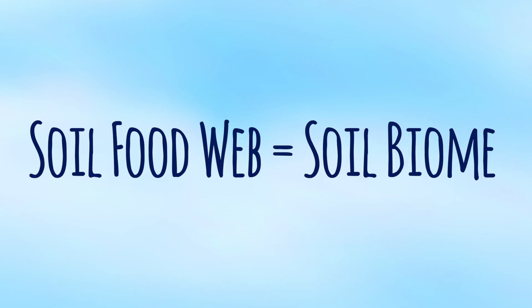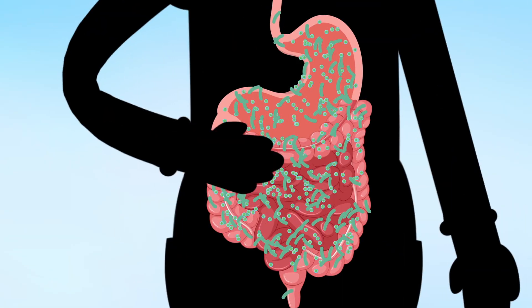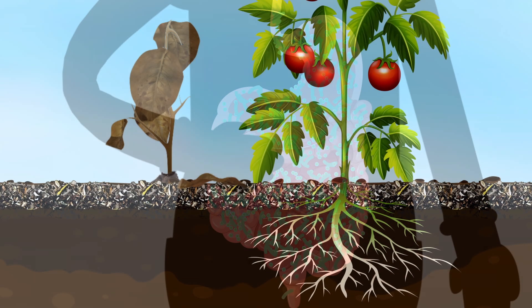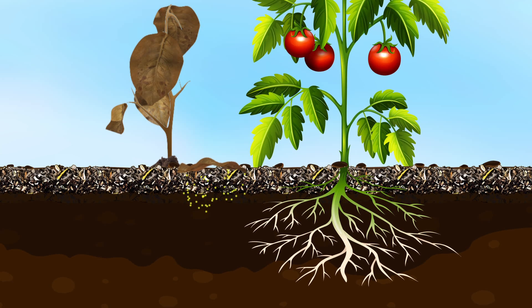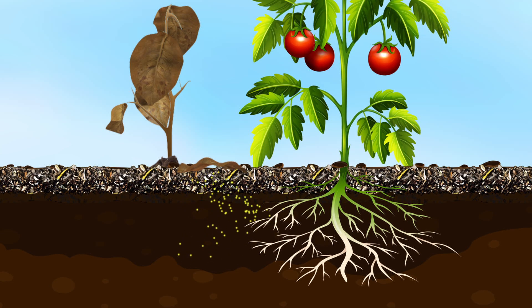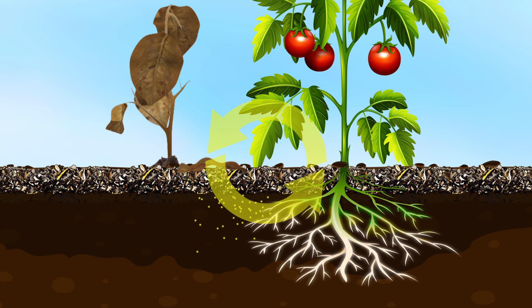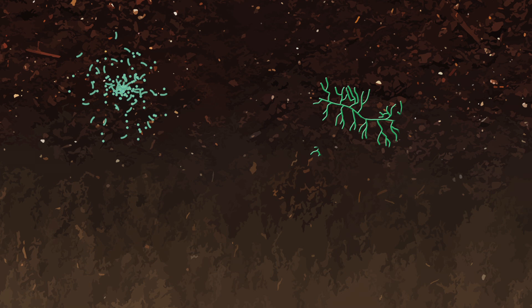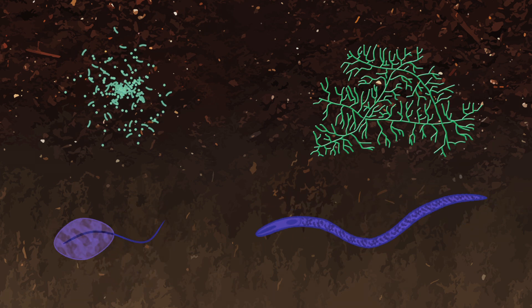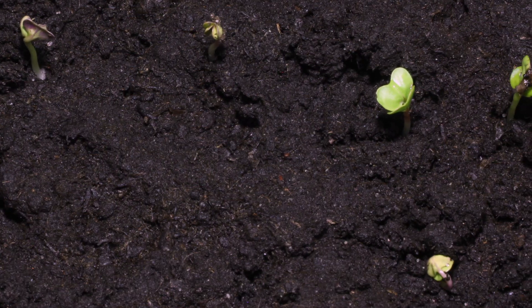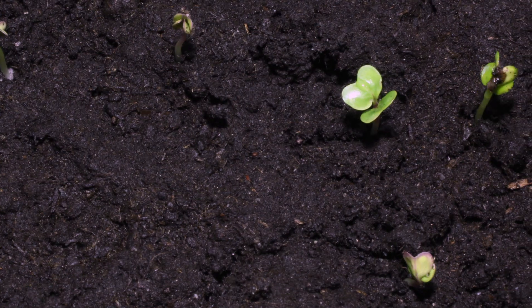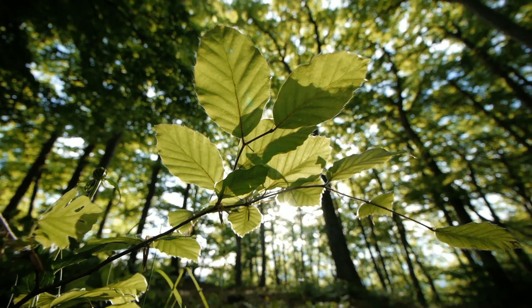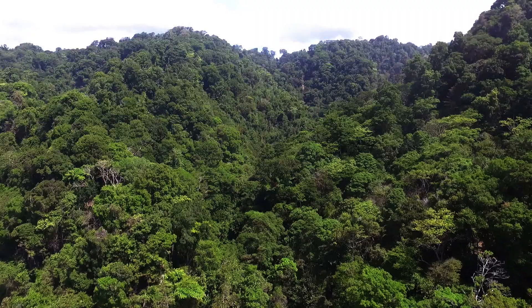The soil food web can be thought of as the soil biome. Just as humans have a gut biome responsible for digesting our foods, the soil has a biome which breaks down organic matter and releases nutrients in plant-available form. This is how nature has been feeding plants for billions of years. The major groups that make up the soil food web are bacteria, fungi, protozoa, and nematodes. When in balance, these different groups interact with each other and with plants to create abundant ecosystems.